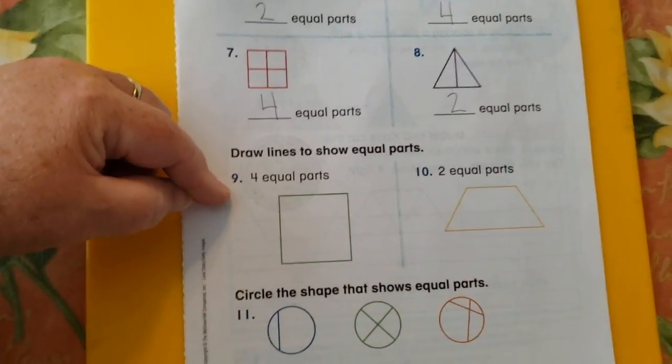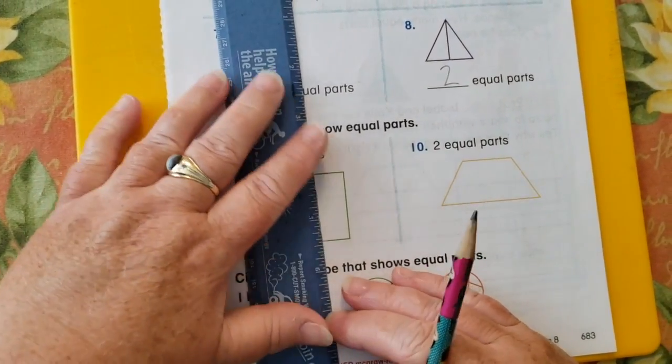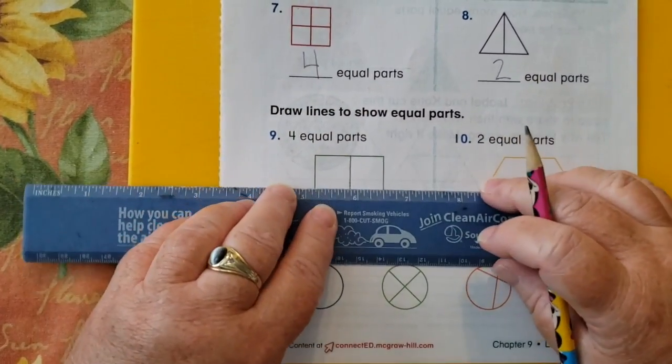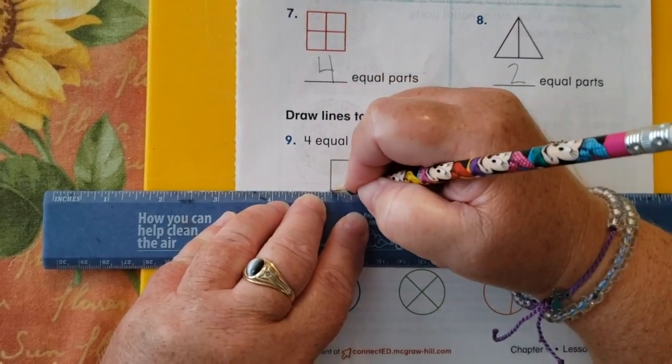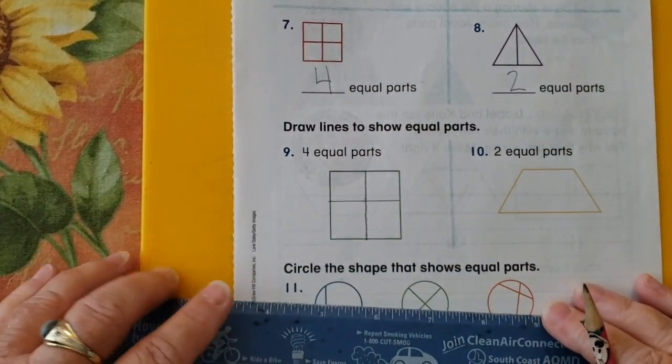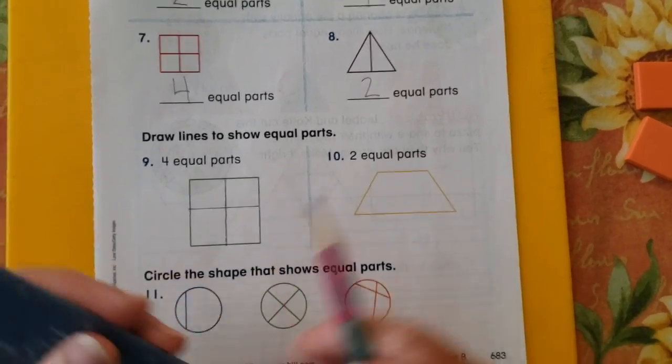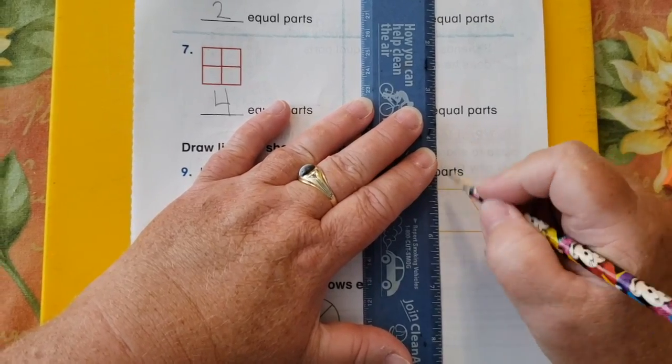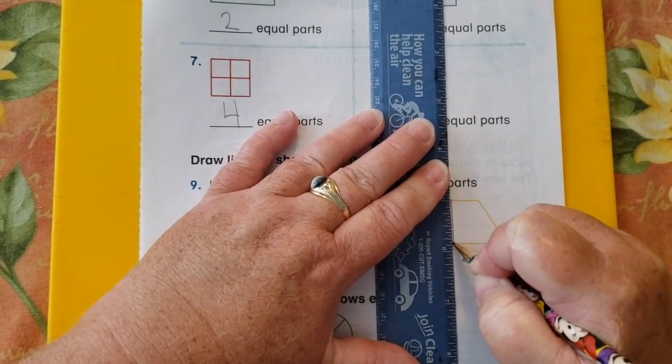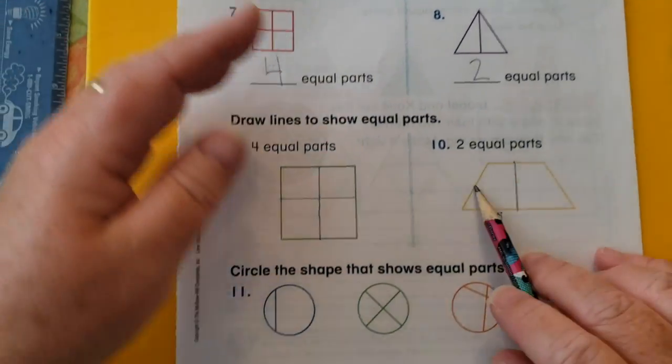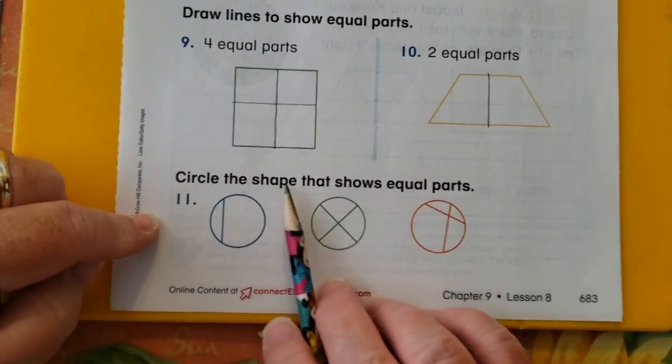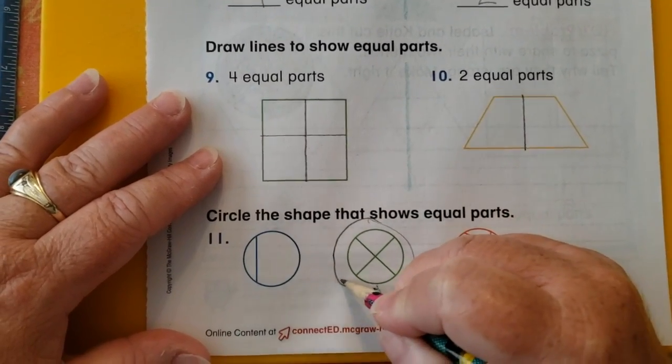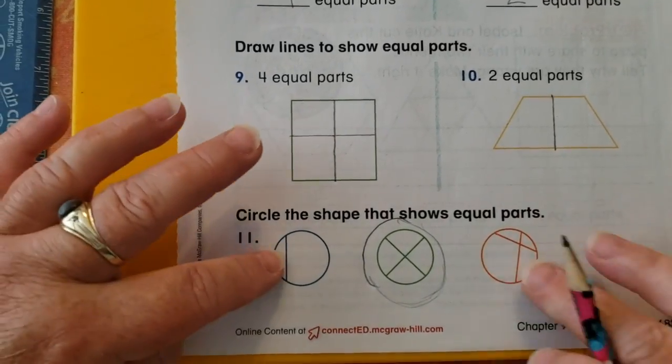For drawing the lines for equal parts, you should have cut your square in half. And then cut it in half again. Mine aren't exactly equal, but that's okay. Trapezoid into two equal parts. I have to go this way. It's like you're folding it in half. So that both halves look the same. Circle the shape that shows equal parts. Only this one. The green one is equal. The other ones are not.